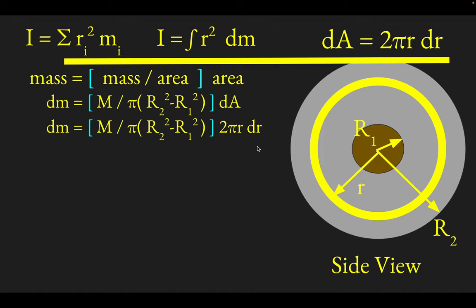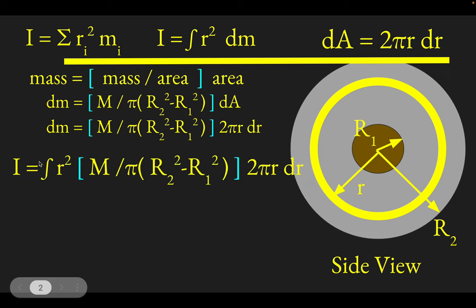Now we're ready to shove that into the relationship for a moment of inertia. So we have the integral of R squared times, and then I just shoved everything in for dM. So here it is in all its glory.